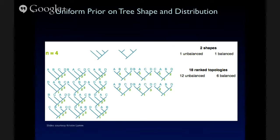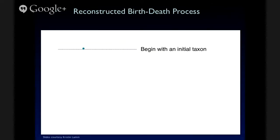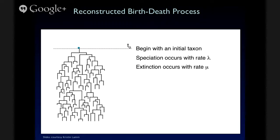When we consider ranked topologies, we have 12 unbalanced trees and six balanced trees. So, under a prior that's uniform on ranked topologies, it becomes more and more likely a priori that we have a more balanced tree.